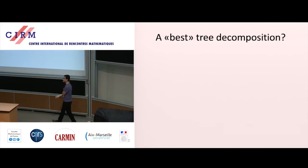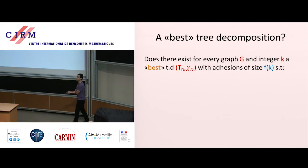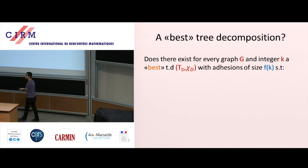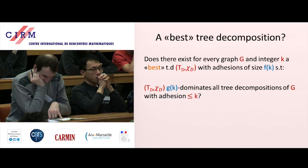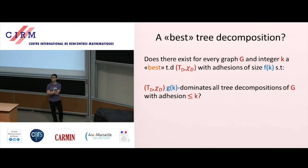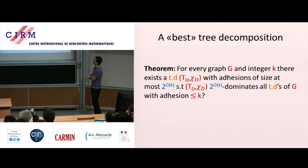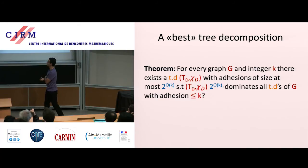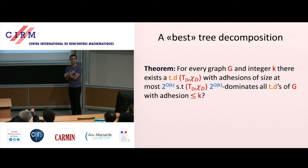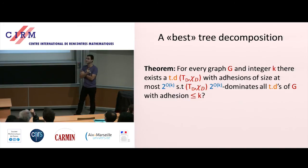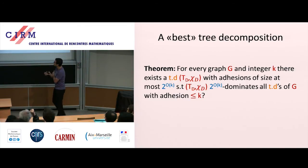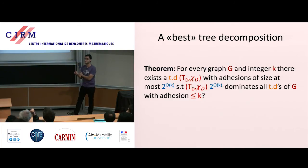Now let's ask again: is there a best tree decomposition? Does there exist for every graph G and integer K a tree decomposition with adhesions of size F(K) that dominates every decomposition with adhesions of size at most K? The answer is yes. We proved that for every graph G and integer K, there exists a tree decomposition with adhesions of size 16^K such that it 16^K-dominates all tree decompositions with adhesions of size K.